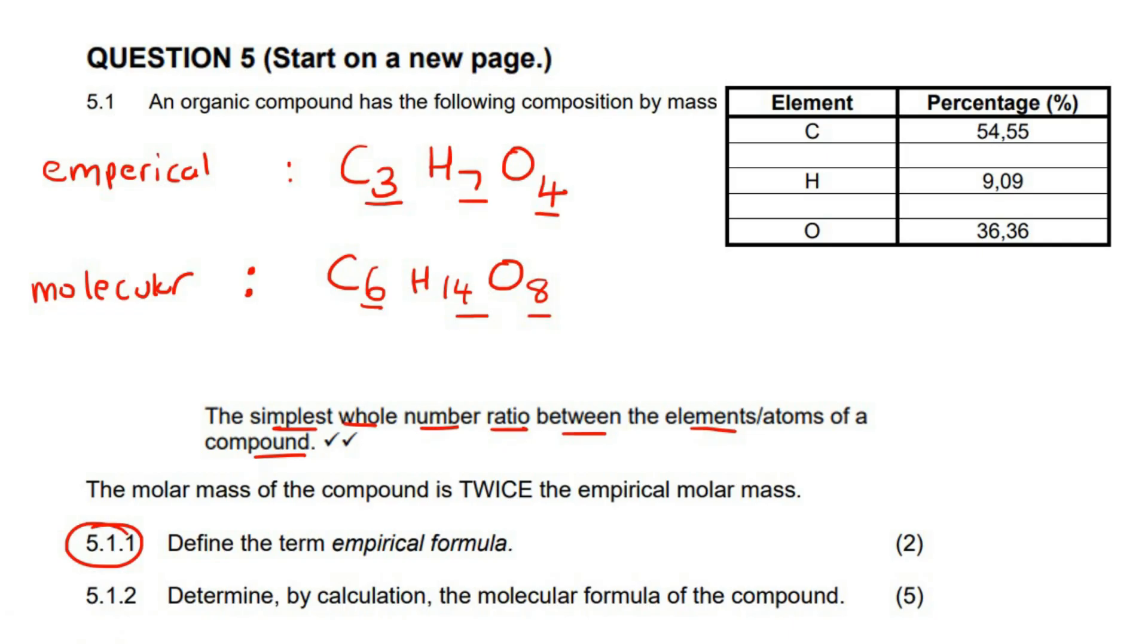Now the next question says, for five marks, determine by calculation the molecular formula. So we first use this to get the empirical, and then we use extra information, such as this, to get the molecular. And this is easy marks, guys. Molecular, empirical formula, it's just a specific way you've got to do it, but it's usually not that difficult. So let's go through the steps.